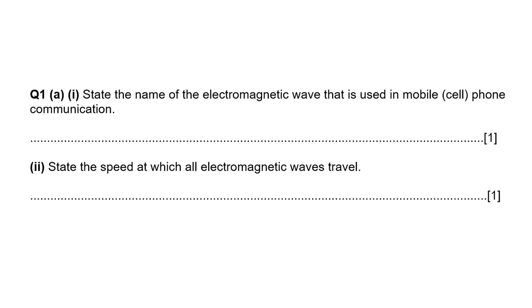First question: state the name of an electromagnetic wave used by mobile phone or cell phone communication. This is something you just have to know. You should know that microwaves are used by phones, which is why when phones first came out people were concerned about their health, worried about microwaves frying their brain.